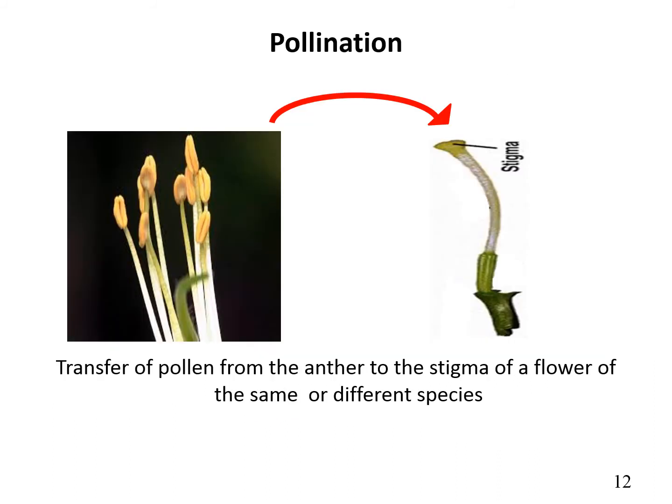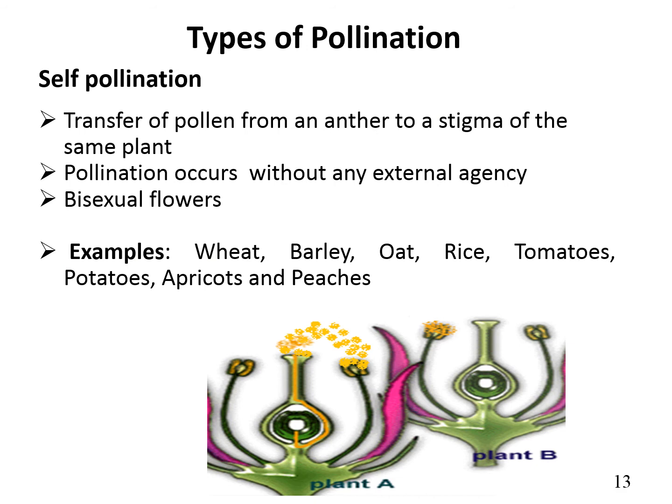Pollination, which brings male and female gametophytes together, is the first step in the chain of events that leads to fertilization. Pollination is the transfer of pollen from the anther of one flower to the stigma of the same or a different flower. There are basically two types of pollination: self-pollination and cross-pollination. In self-pollination, transfer of pollen occurs from the anther to the stigma of the same plant, and mostly it occurs without any external agency.